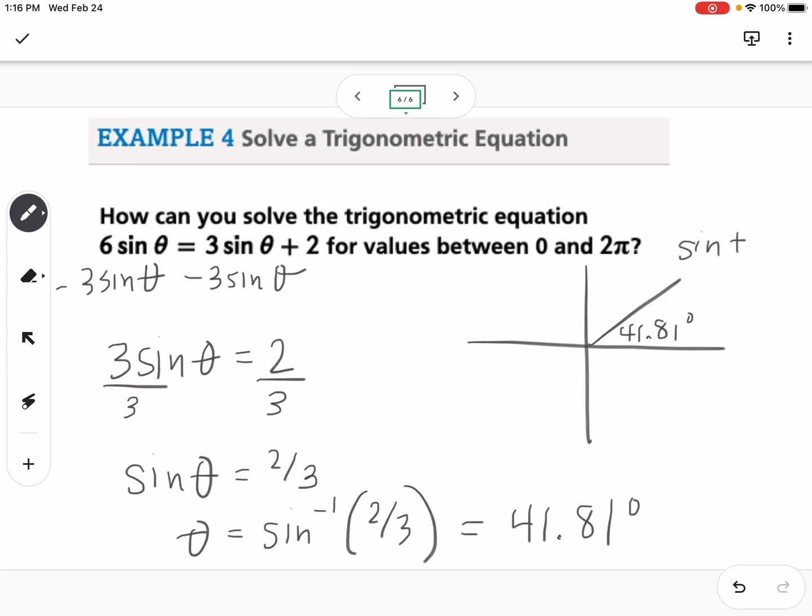So 41.81 degrees is in the first quadrant and sine is positive in the first quadrant. So I think, okay, I'm talking about sine. Where else is sine positive? That would be in the second quadrant. So I'm going to reflect it over here. So that angle right there is 41.81. So I want to find from zero to that line. So my other angle would be 138.19 degrees.